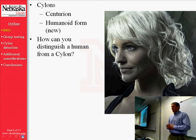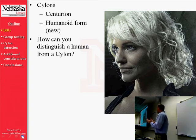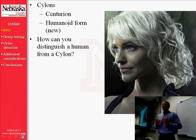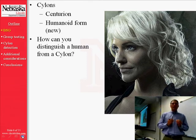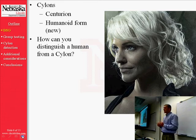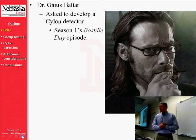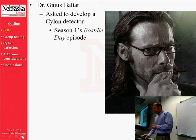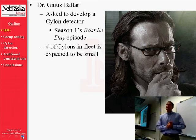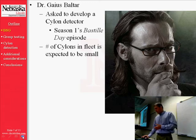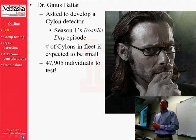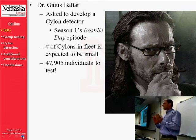Early on in the TV series, the humans find out that this new humanoid form of Cylon exists. A very important question for them to answer was: how can you distinguish a human from a Cylon? The leaders of the fleet ask a scientist by the name of Dr. Gaius Baltar to develop a Cylon detector. Fortunately, the number of Cylons in the fleet is expected to be small, but there are 47,905 individuals in the fleet who all have to be tested.